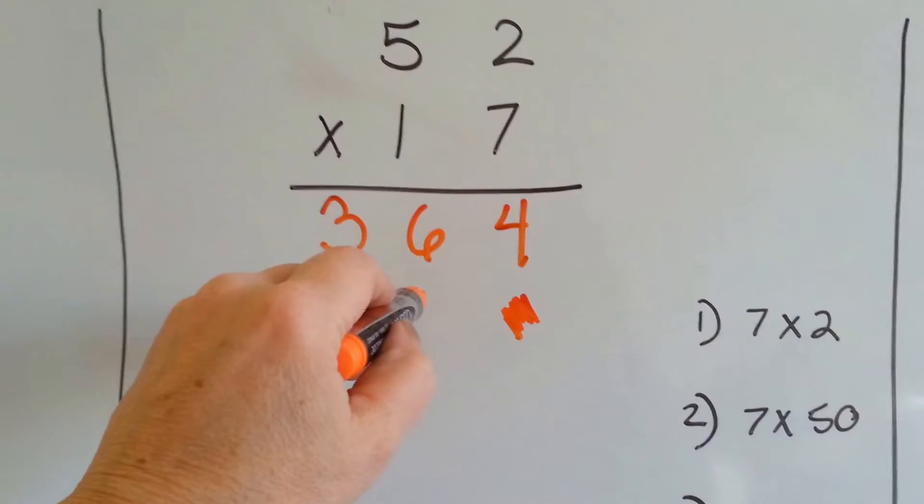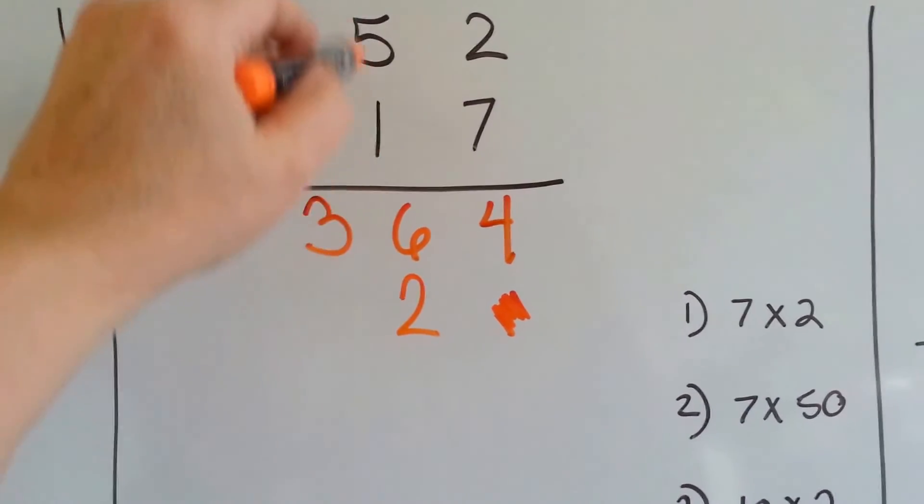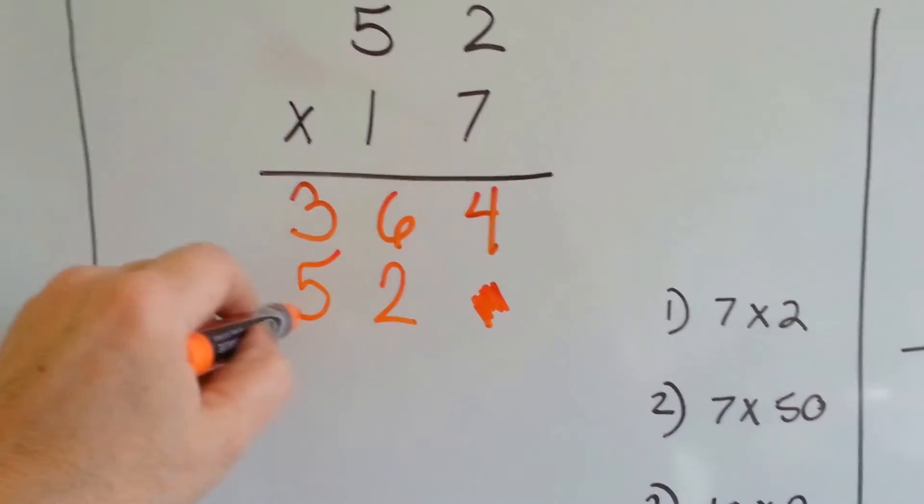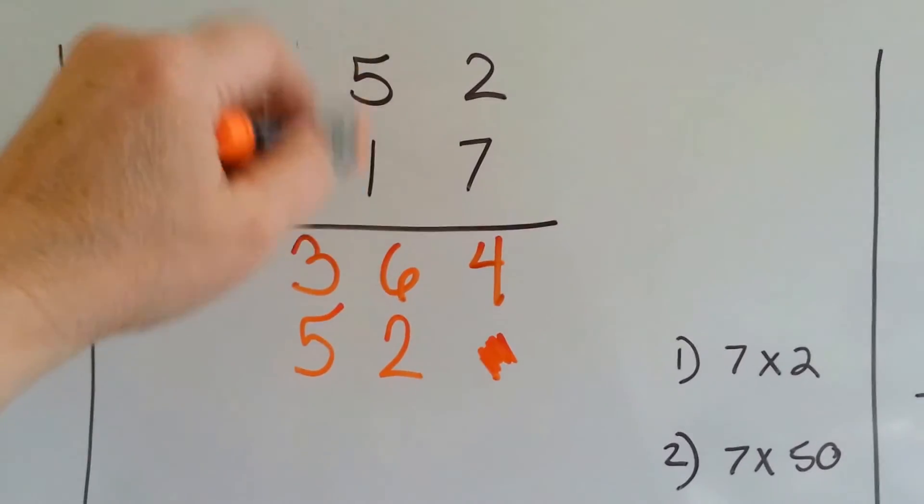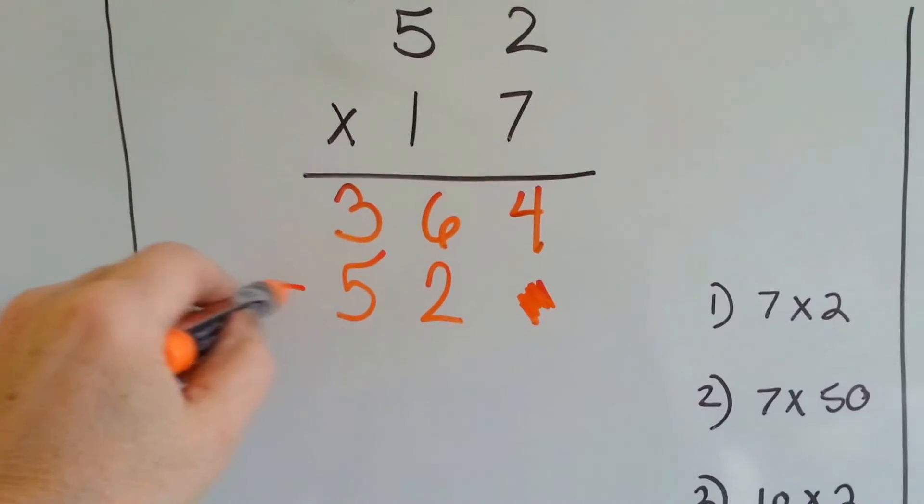1 times 2 is 2, we put the answer here, and 1 times 5 is 5. Now, what would have happened if I had left that carryover up there when we did the 1 times 5? We might have added it and gotten the wrong number.